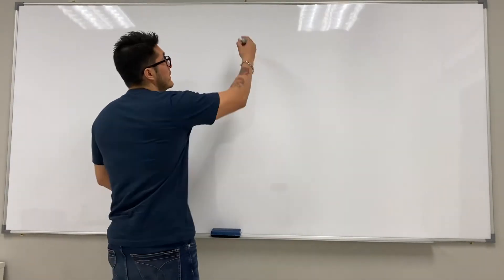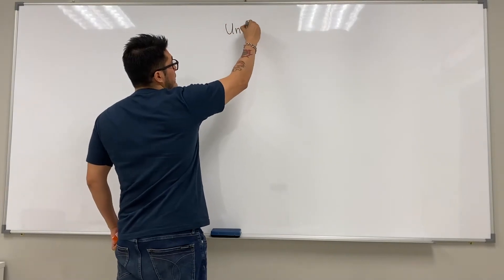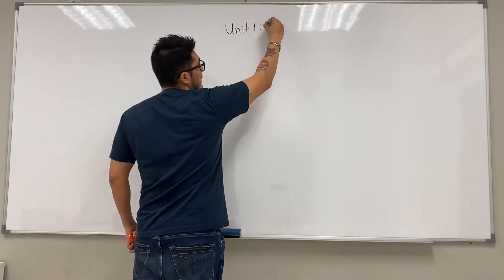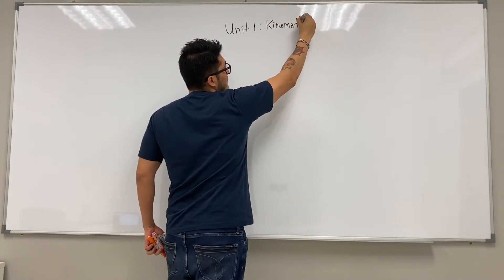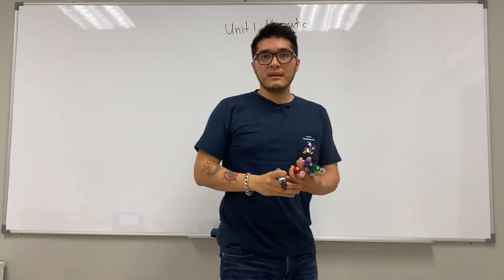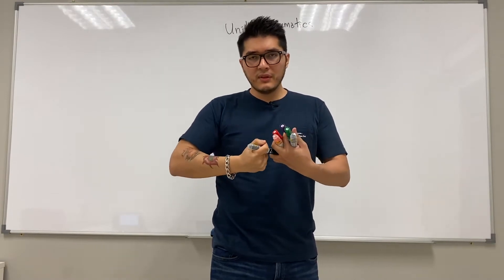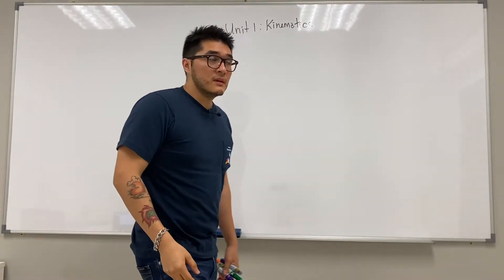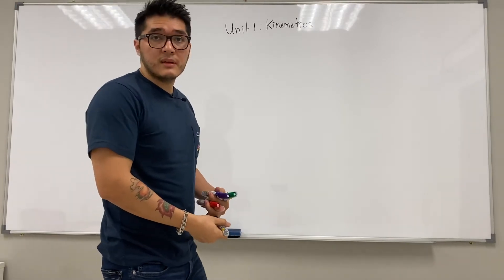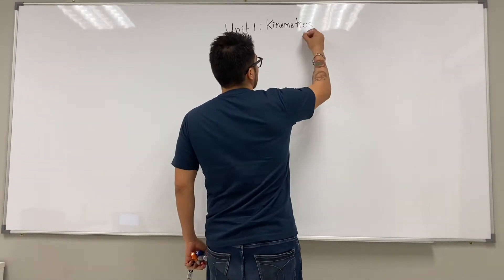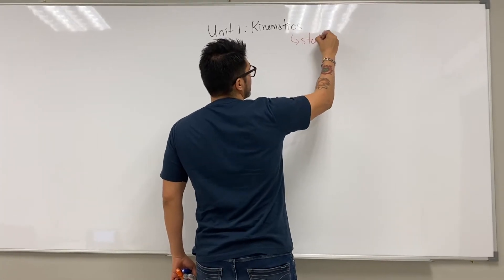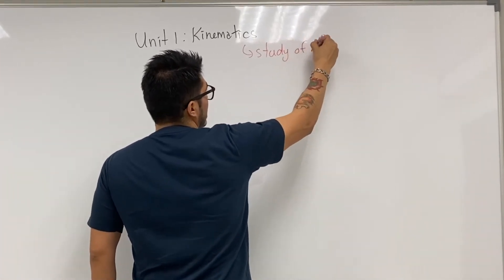Hello, welcome to the course. We're going to get started with the first unit of study. So what is unit number one? We're going to be studying kinematics. Kinematics is a very, very old subject — that's how physics first began. People started to think about moving objects. Kinematics is going to be the study of motion.